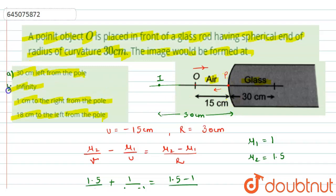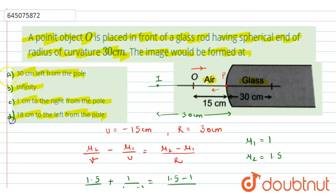So from the given options we have A, B, C and D. Option A will be the correct answer, 30 centimeter left from the pole. Thank you.